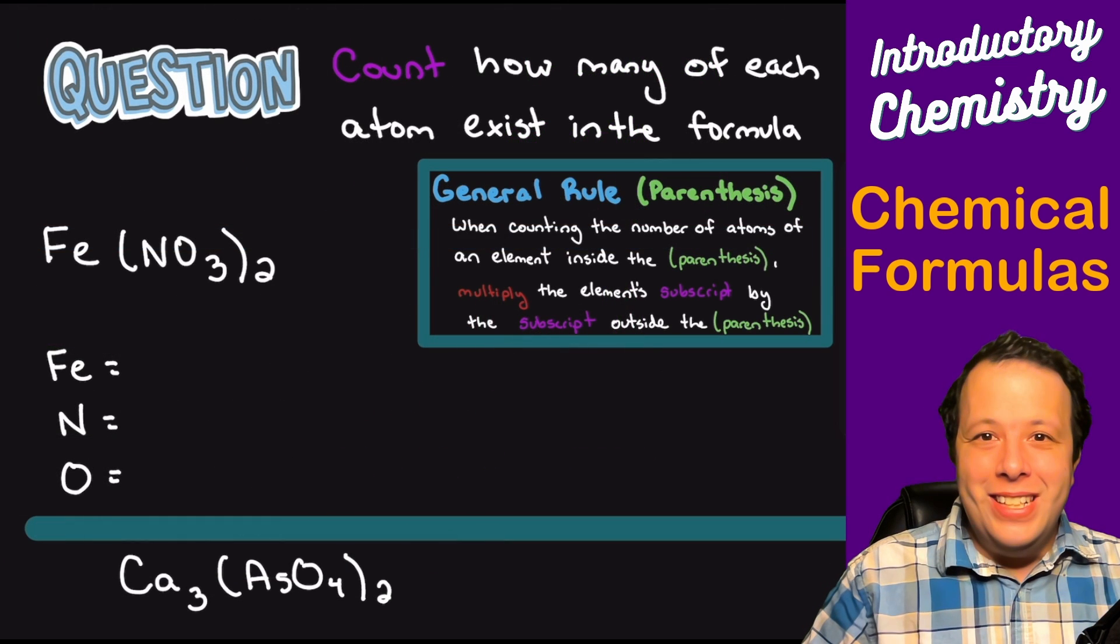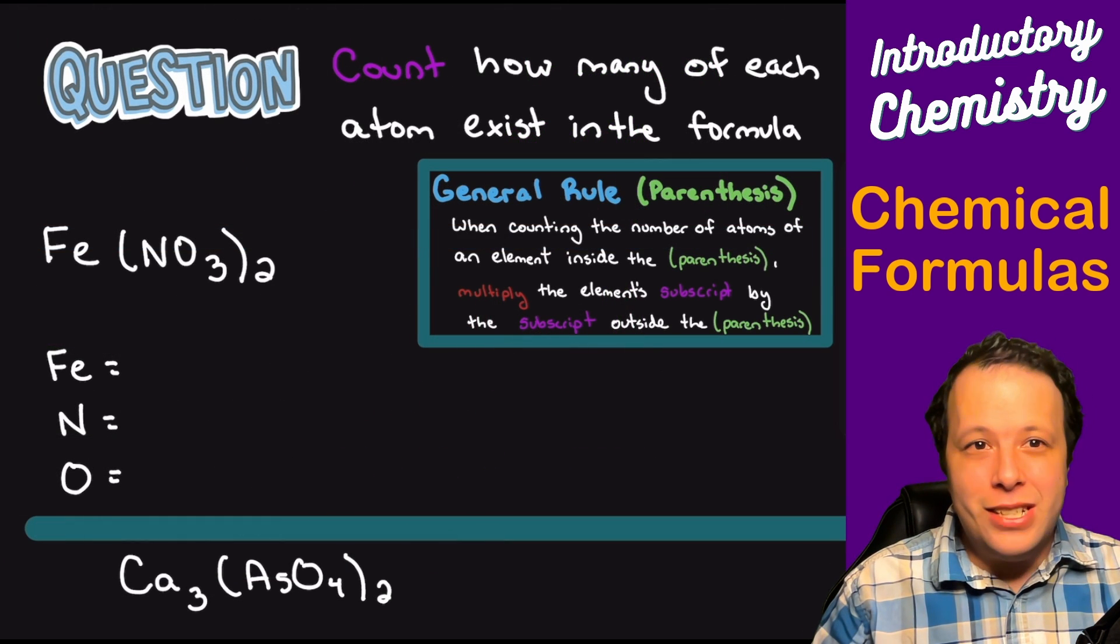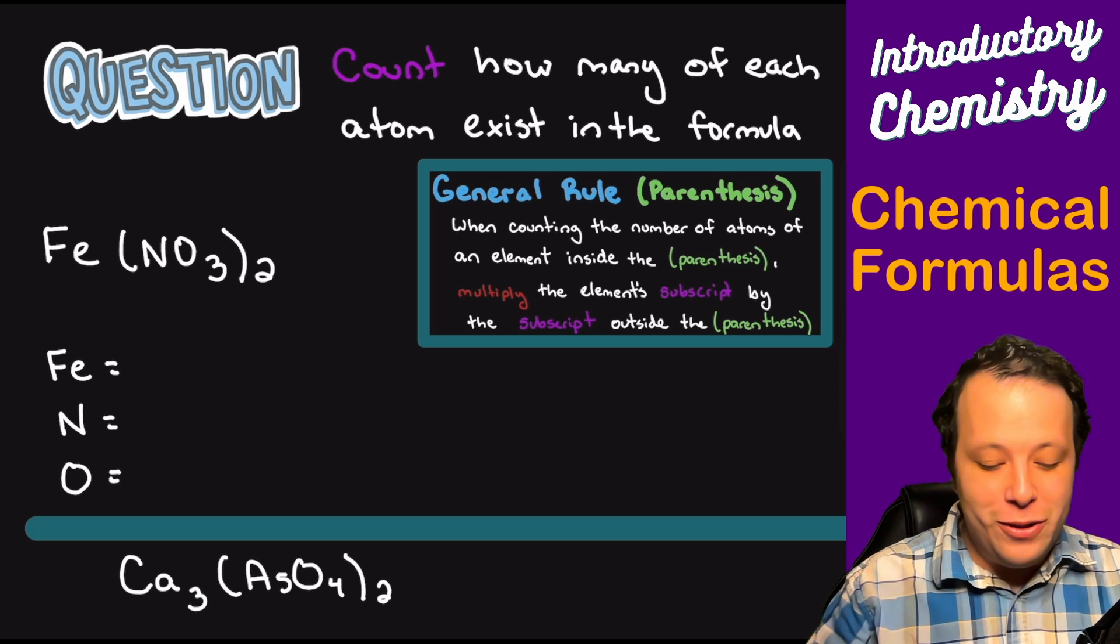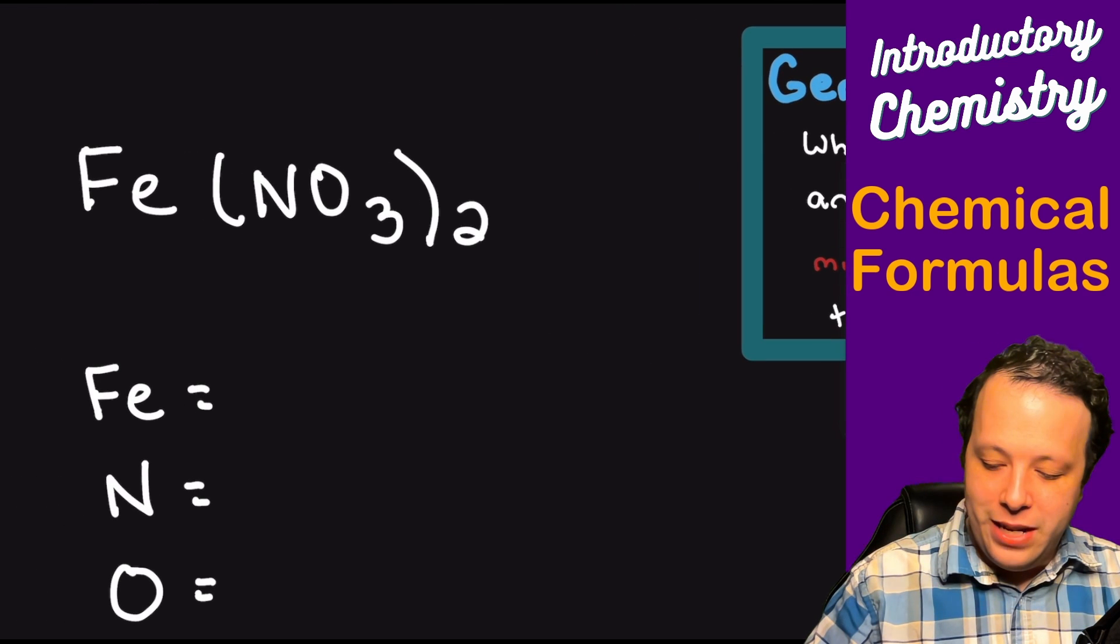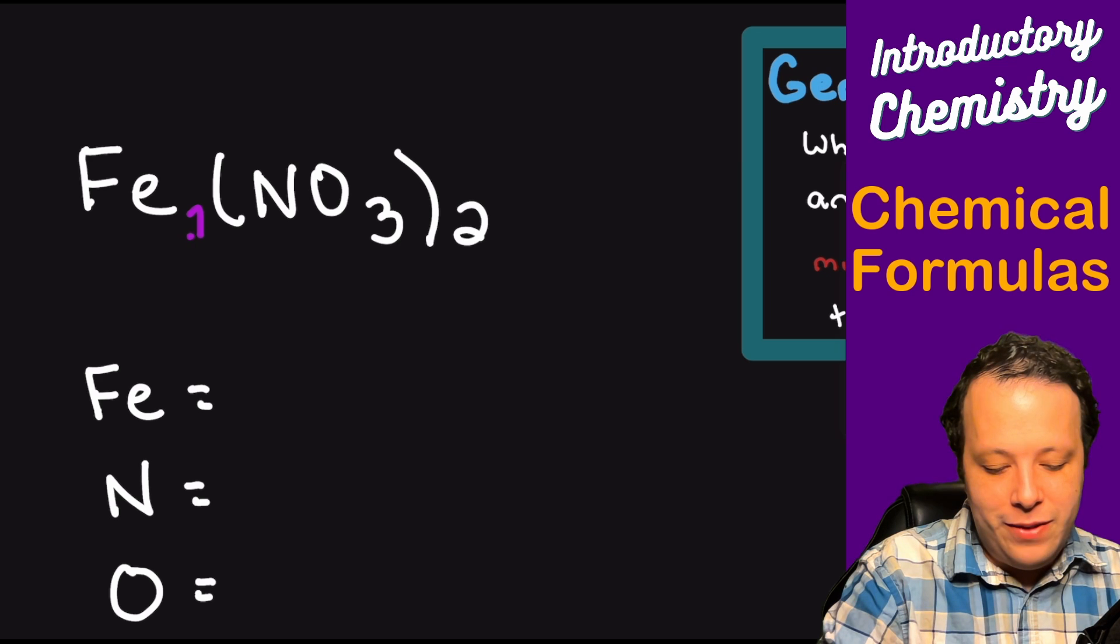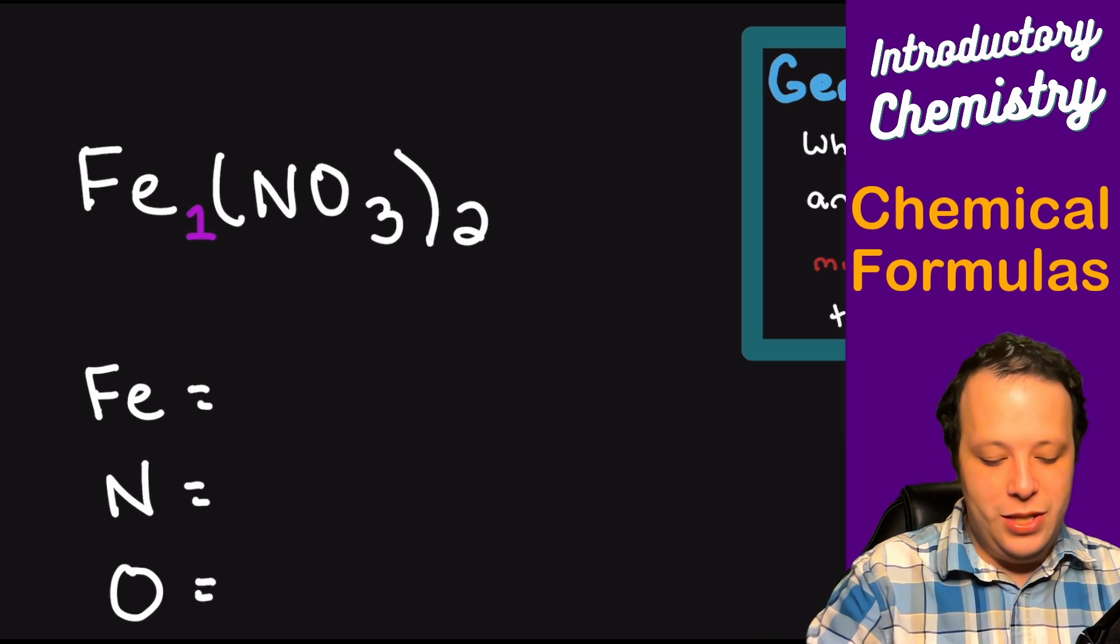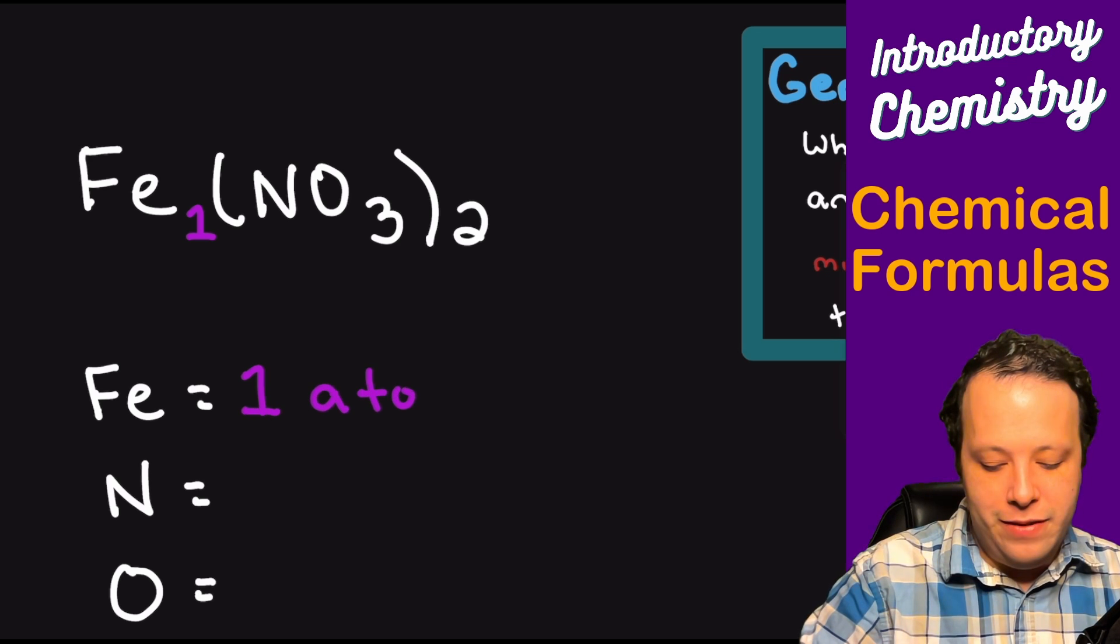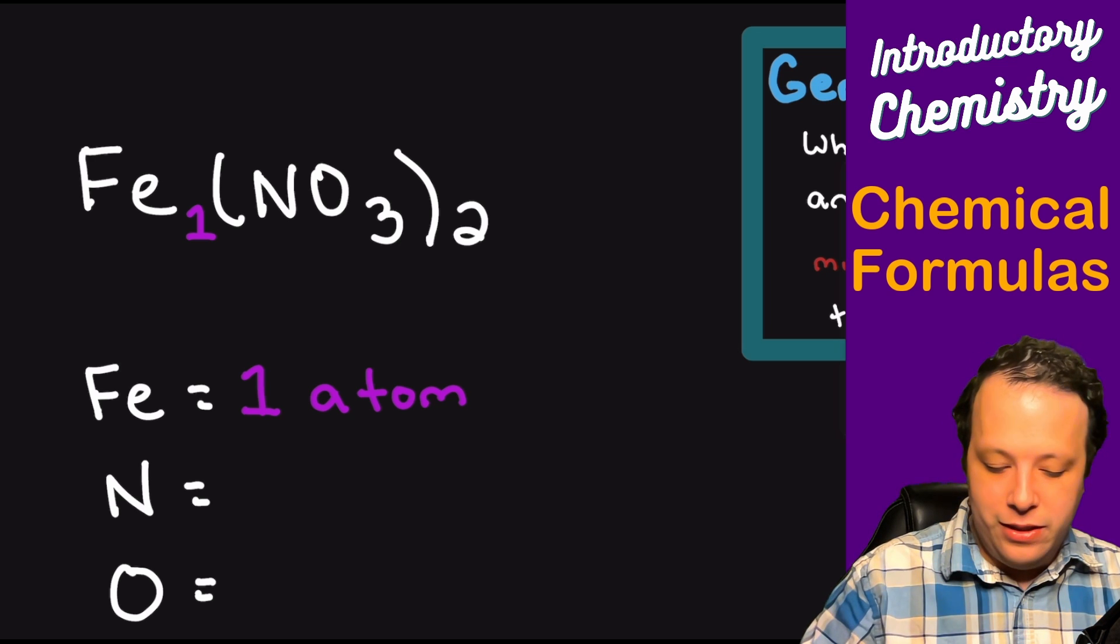Okay, so in this example we are going to be counting how many of each atom exist within a formula. So this is very similar to the alphabetical one we had earlier. So what are we going to be doing first? Well, we got to realize we have a bunch of different subscripts here. So let's first start with iron. We can see iron's outside of the subscript; there's nothing written there, so we can automatically assume we have one atom of iron.